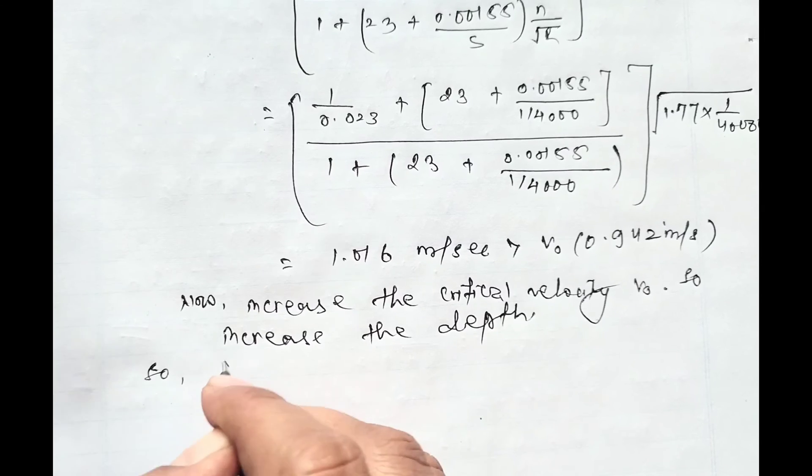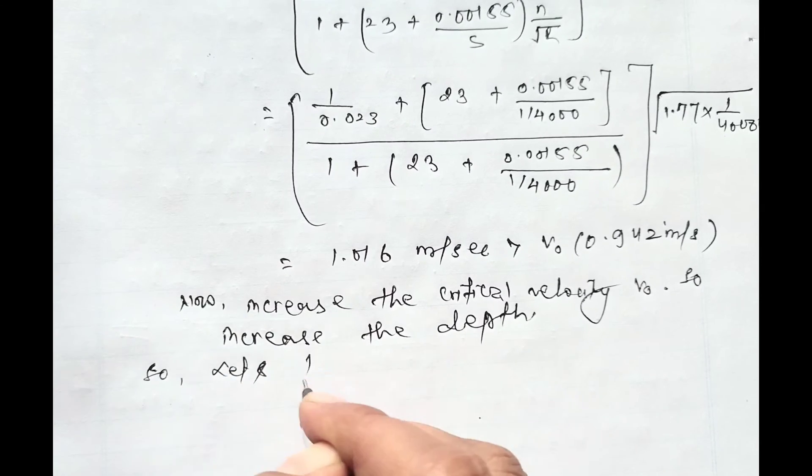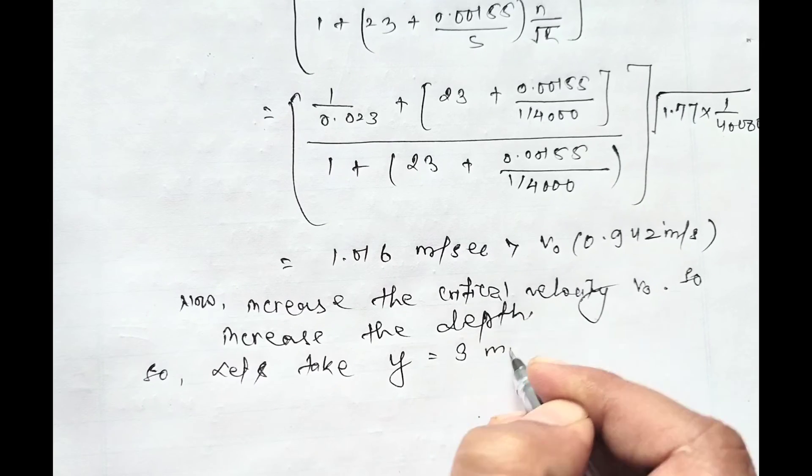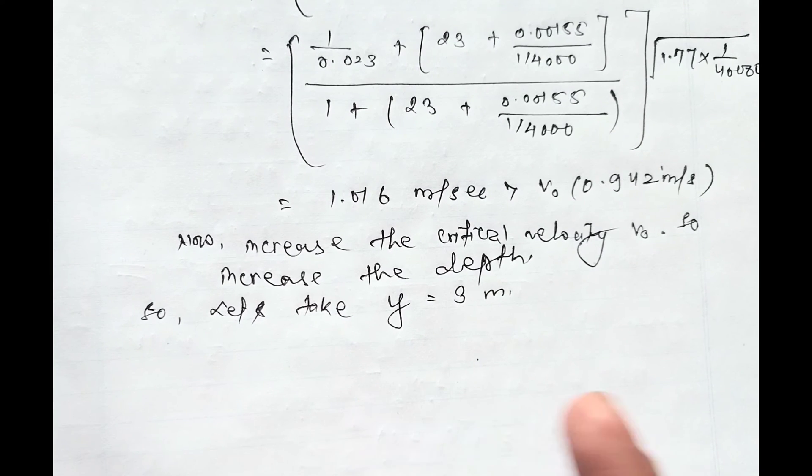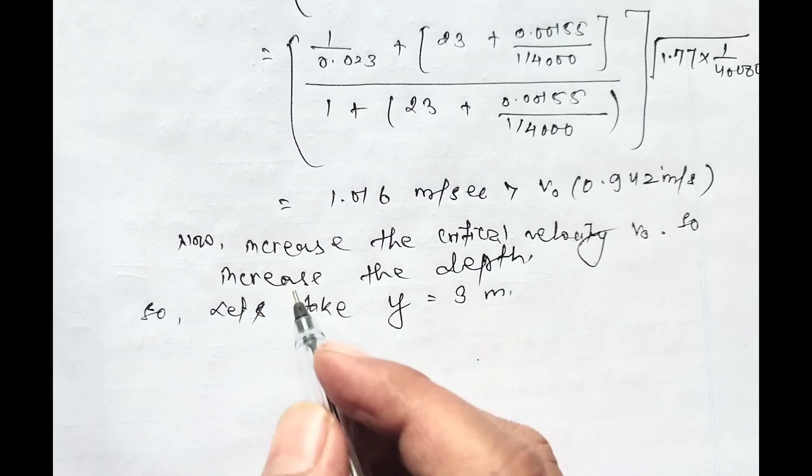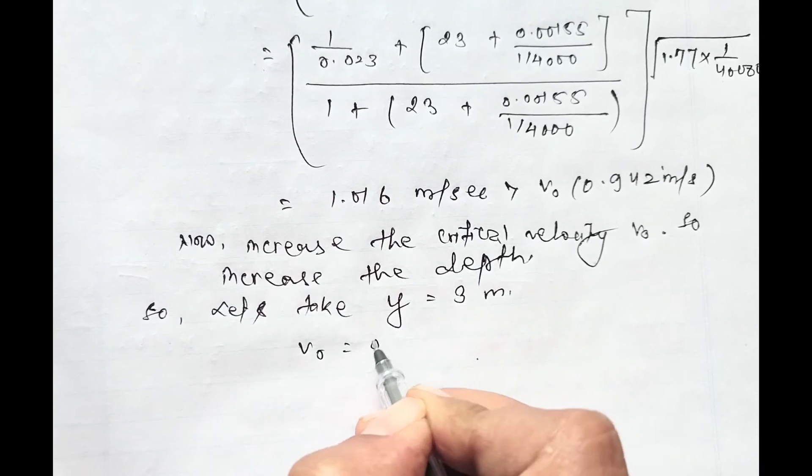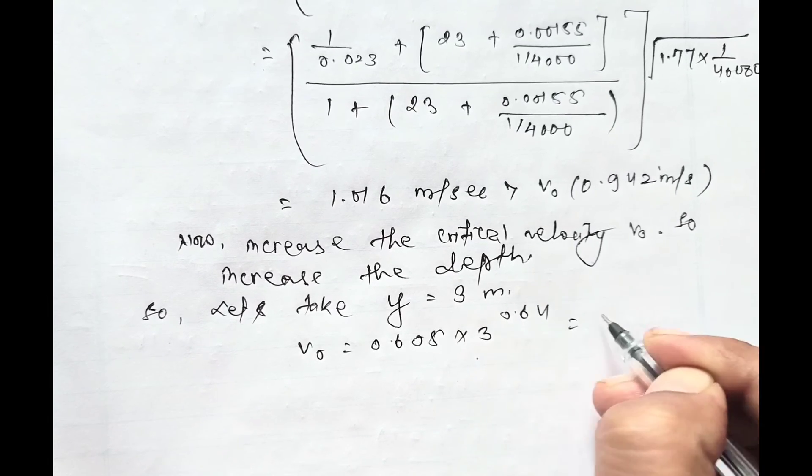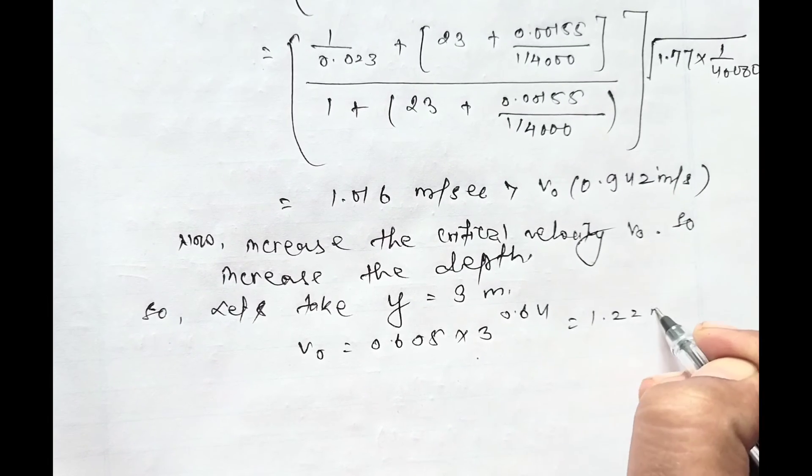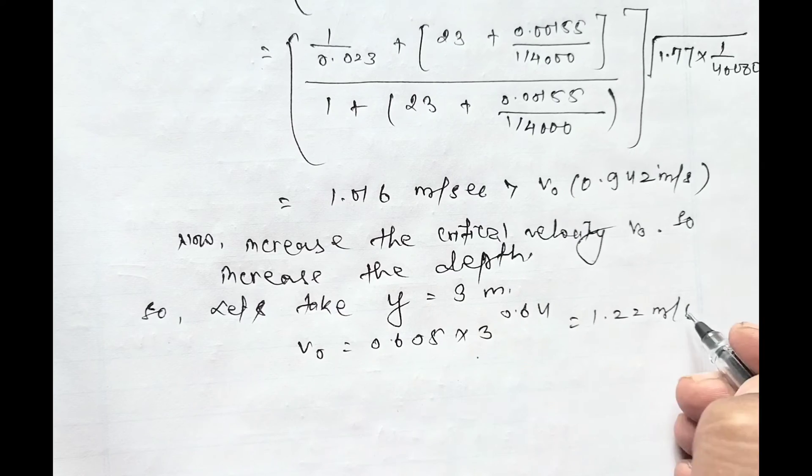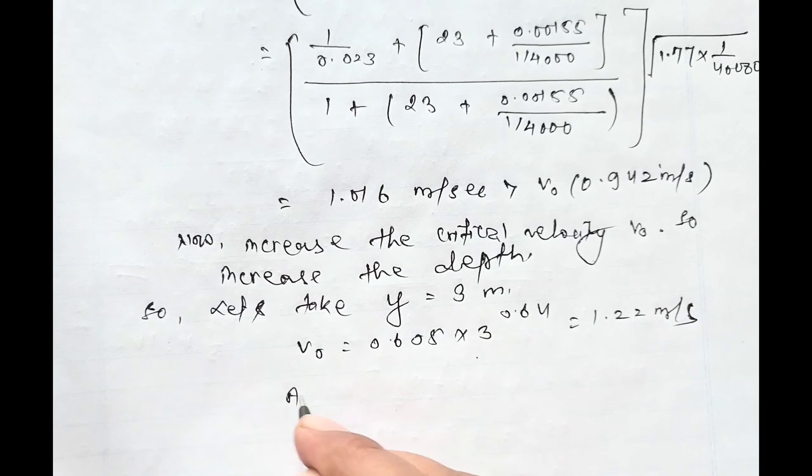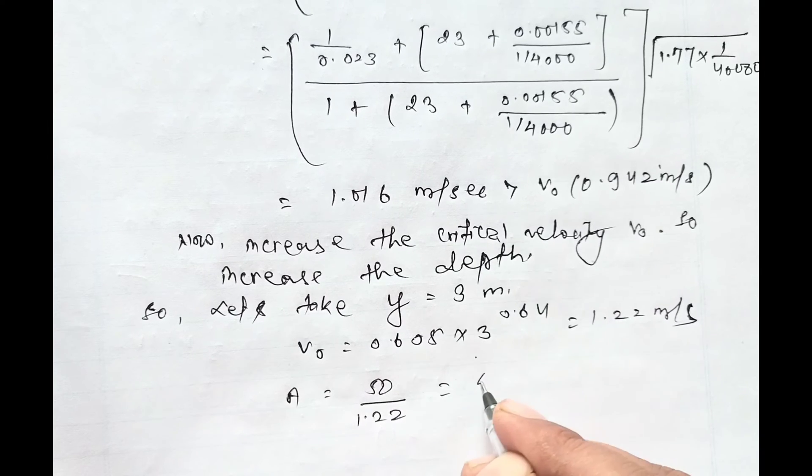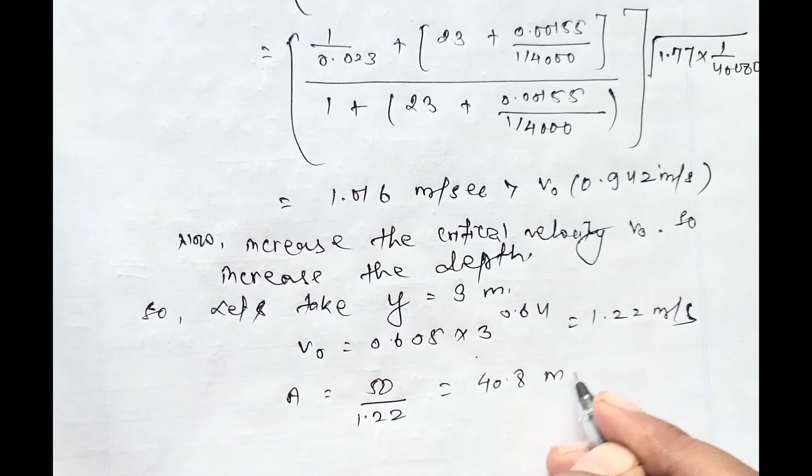So let's take y equals 3 meter. Again we have to repeat all those steps. V₀ equals 0.605 × 3^0.64 equals 1.22 meter per second. Area equals 50 divided by 1.22, equals 40.8 meter square.